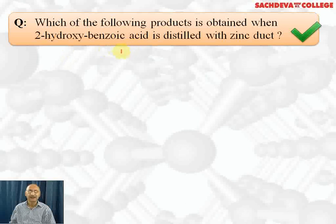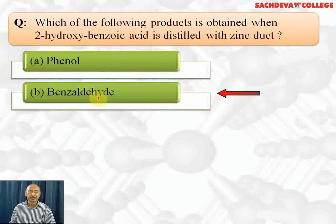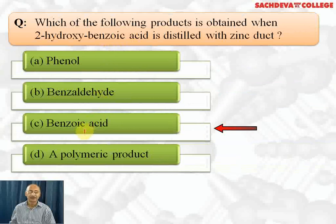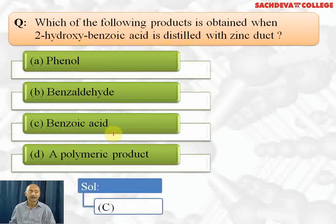Next question: which product is obtained when 2-hydroxybenzoic acid is distilled with zinc dust? Options are phenol, benzaldehyde, benzoic acid, and a polymeric product. The correct answer is benzoic acid. When any phenolic compound is heated with zinc dust, the phenolic OH group is removed. So from 2-hydroxybenzoic acid (salicylic acid), distillation with zinc dust removes the OH group and leaves benzoic acid. If you want to convert salicylic acid to benzoic acid, heat it with zinc dust.